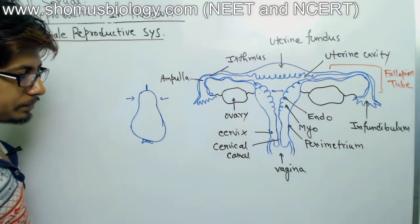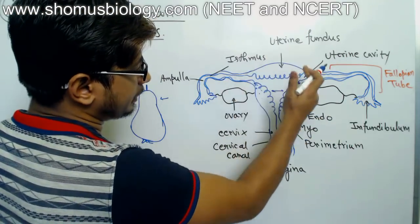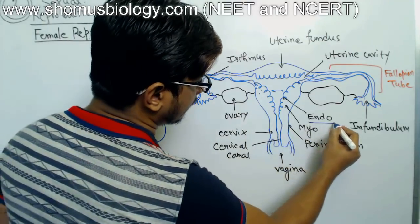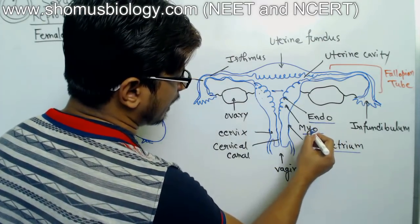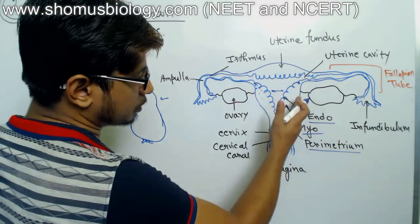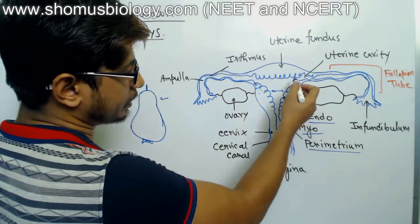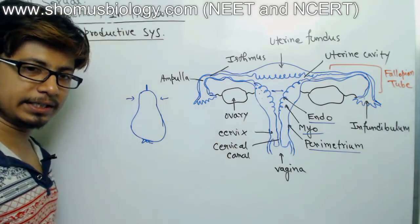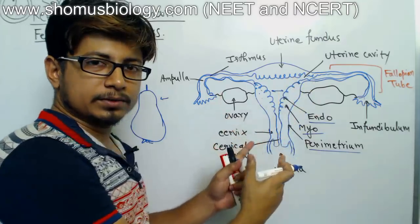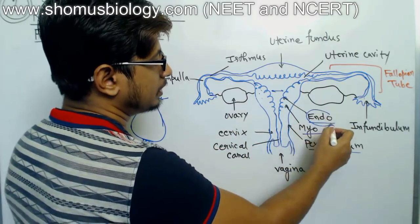The uterus is made of three separate tissue layers: the endometrium, myometrium, and perimetrium. The perimetrium is the outermost layer, the myometrium is the thick muscular middle layer, and the endometrium is the innermost layer. The perimetrium provides the outer structure and support, while the endometrium is the tissue layer where the embryo is implanted after fertilization.